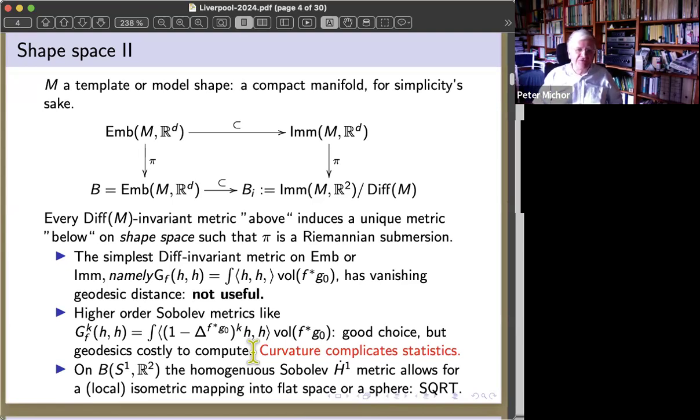Every diffeomorphism invariant Riemannian metric above induces a unique metric below on the shape space, such that the projection π is a Riemannian submersion. I want to mention the simplest diffeomorphism metric on space of embeddings or immersions, namely integral over the inner product pointwise of H with H integrated with the volume form of the pullback metric of the metric of R^d has vanishing geodesic distance.